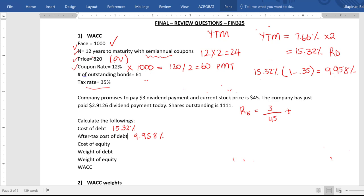And the question says the company promises to pay $3. So this is my dividend payment one. Current stock price is 45 plus the growth rate. Now the growth rate in this problem is not given directly. Instead, we know dividend payment zero, dividend payment one. And we know dividend payments grow by the growth rate.